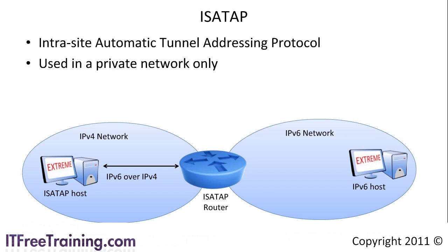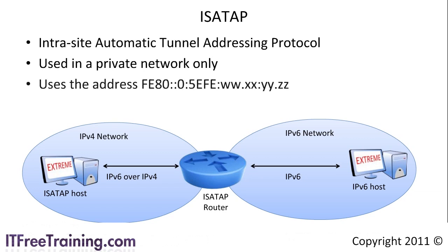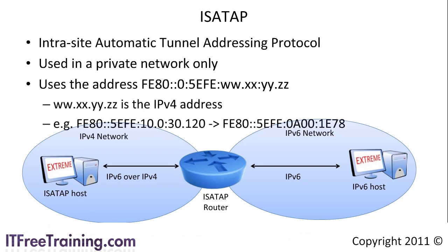In order for a host on the IP version 6 network to receive the communication, the router must communicate to the IP version 6 host in IP version 6. To do this, the router uses a link-local address. Link-local addresses always start with FE80 and are used for local traffic only. In the host part of the address you have 5EFE followed by the IP version 4 address. For example, to communicate with 10.0.30.120, the router would use the link-local address FE80 followed by the host ID of 5EFE:10.0.30.120. If a client on the IP version 6 network wants to communicate with the IP version 4 network, the process is simply reversed.